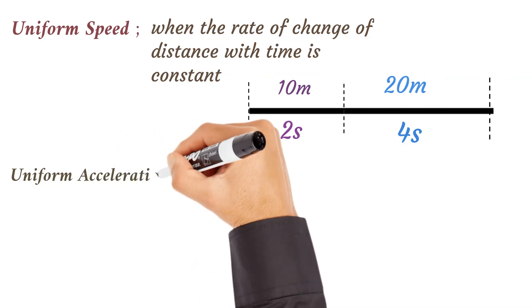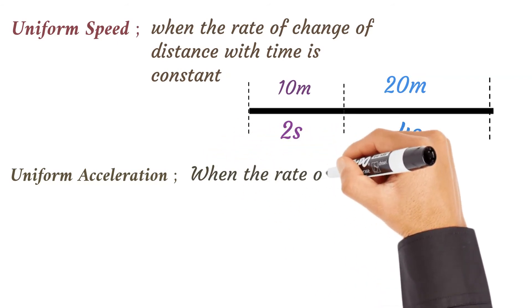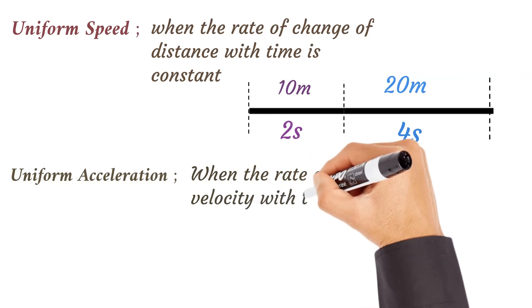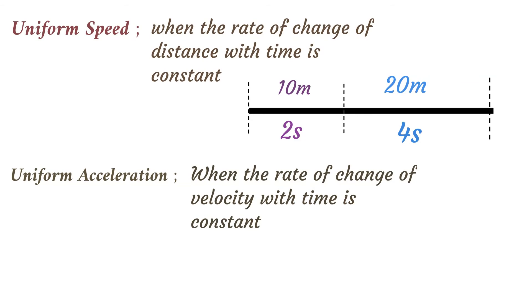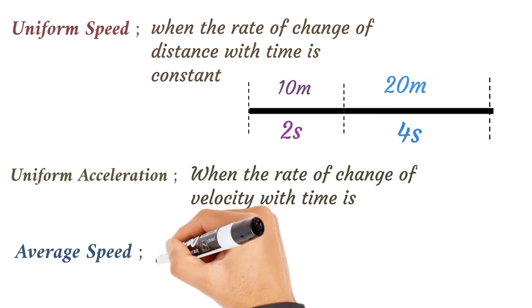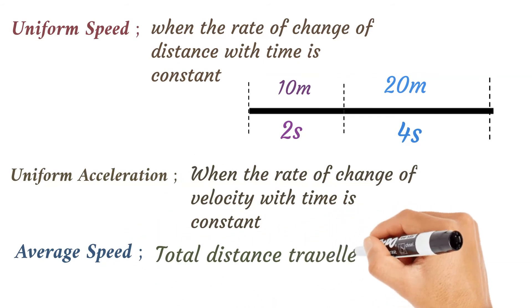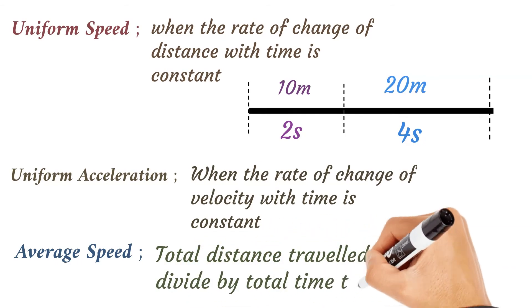Uniform acceleration is when the rate of change of velocity with time is constant. And the last one on this list is average speed. This is the total distance traveled by a body divided by the time taken for the journey.